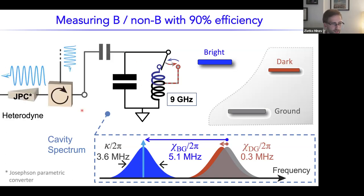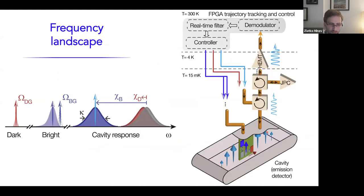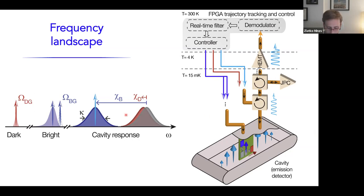The experimental setup has the device at the bottom of a dilution fridge at 15 mK, where the output signal is routed through a quantum amplifier to room temperature through FPGA devices that demodulate, apply a real-time filter, and control the signal in real-time, closing the feedback loop. We had control over the dark transition, bright transition using multiple tones, and the cavity response, which we probed at the bright cavity frequency.